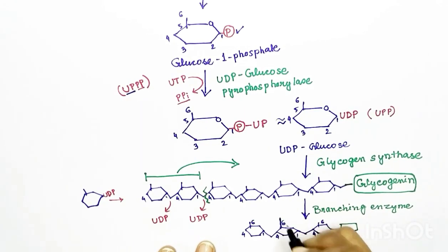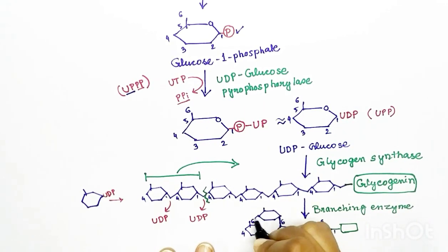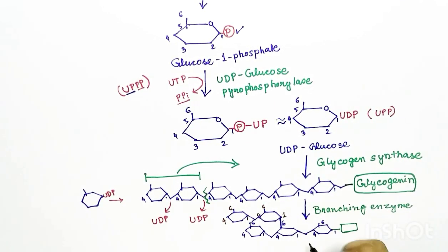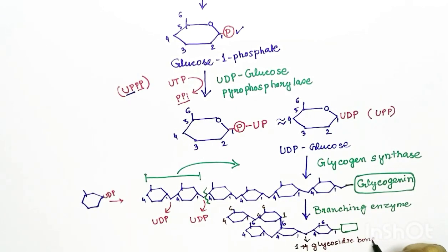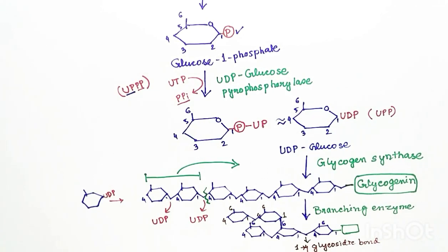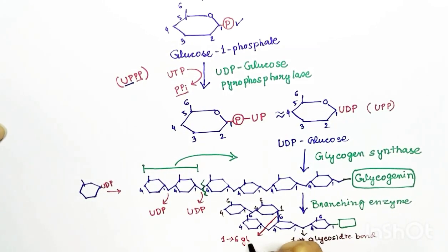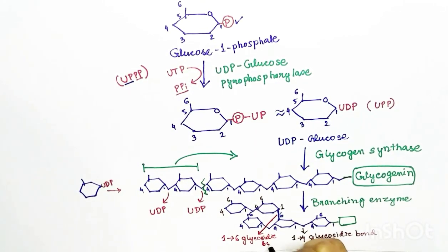In the linear chain, the bonding between first and fourth carbon is called 1-4 glycosidic bond, and the bonding in the branching between first and sixth carbon is called the 1-6 glycosidic bond.